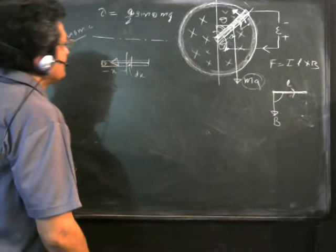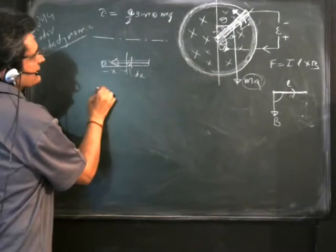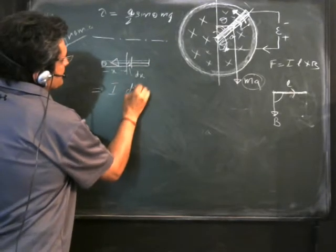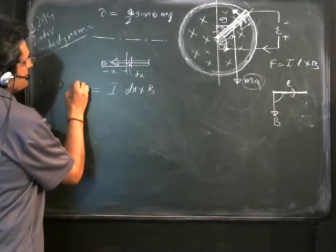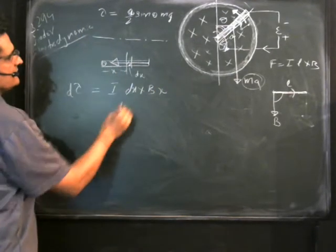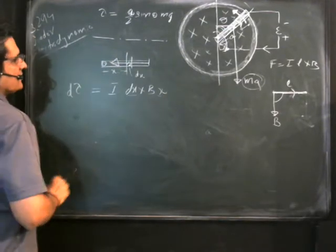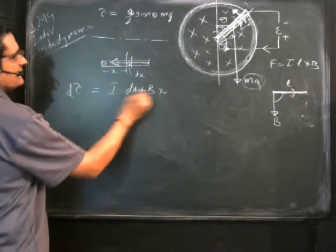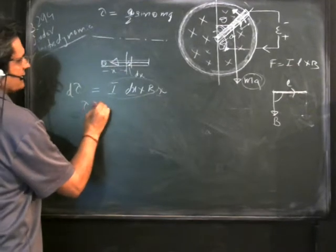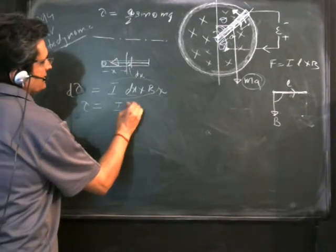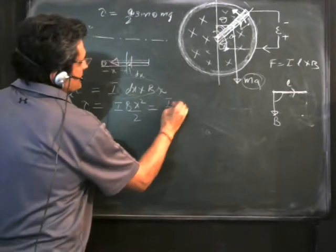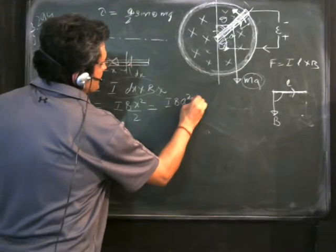Because of this current, the force on each element dx is I·dx·B. The torque contributed by each element is x times this force. Integrating over the rod from 0 to a, the total torque is I·B·x²/2, evaluated to give I·B·a²/2 in the anti-clockwise direction.